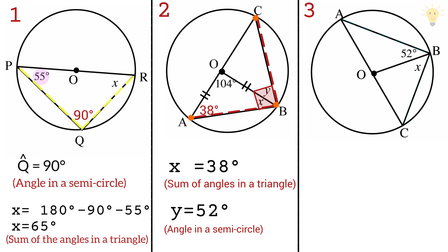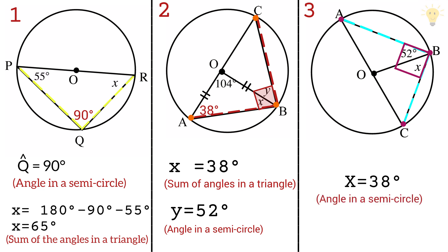In example 3, the two lines are drawn from the two ends of a diameter and meet at one point on the circumference, so this angle is 90 degrees. To find x, we subtract 52 from 90, which gives 38. Therefore the value of x is 38 degrees.